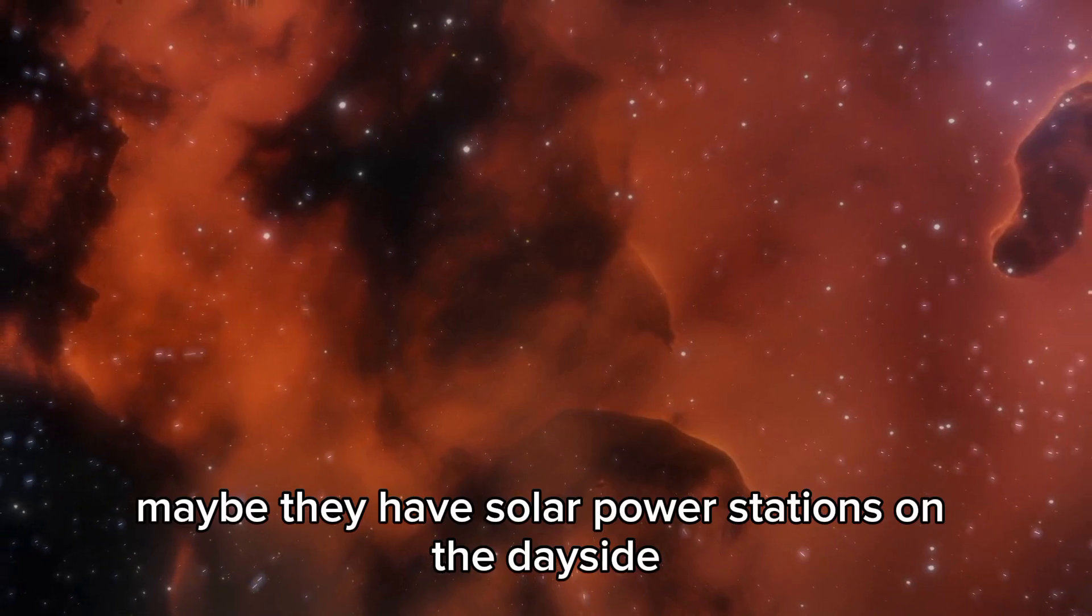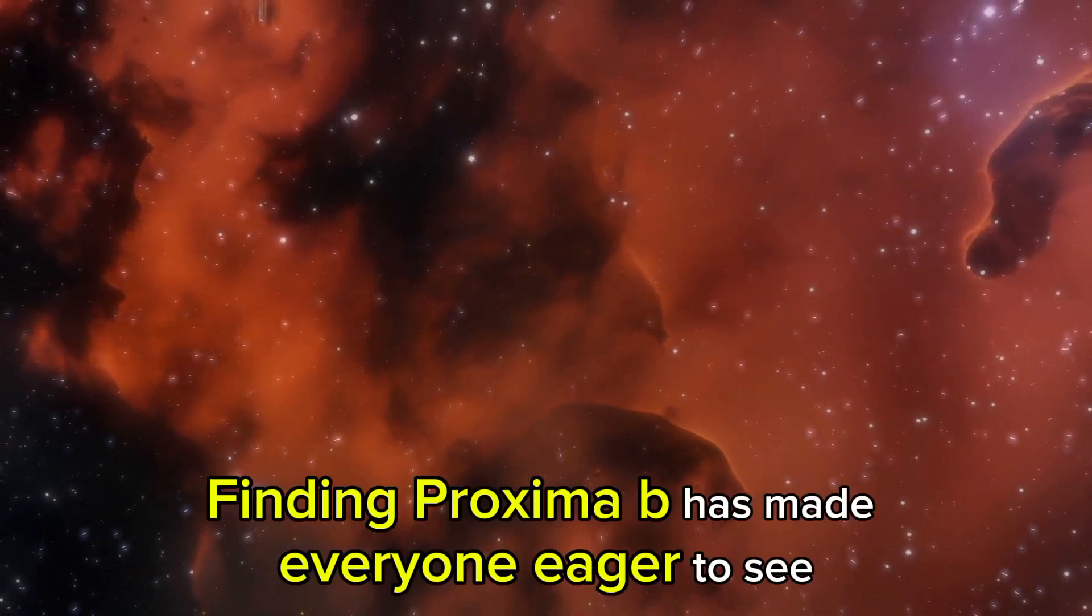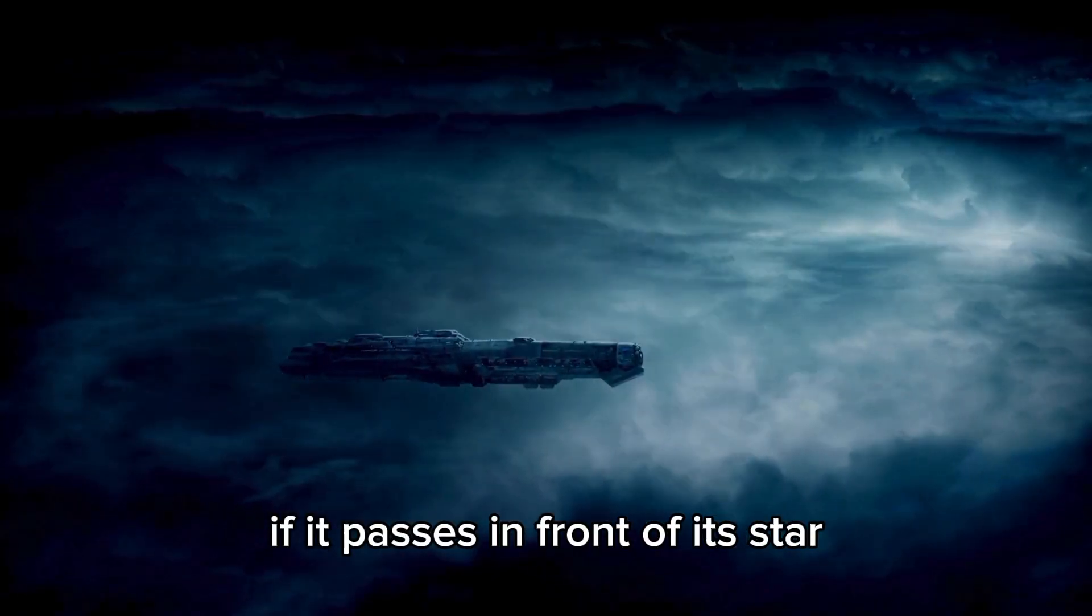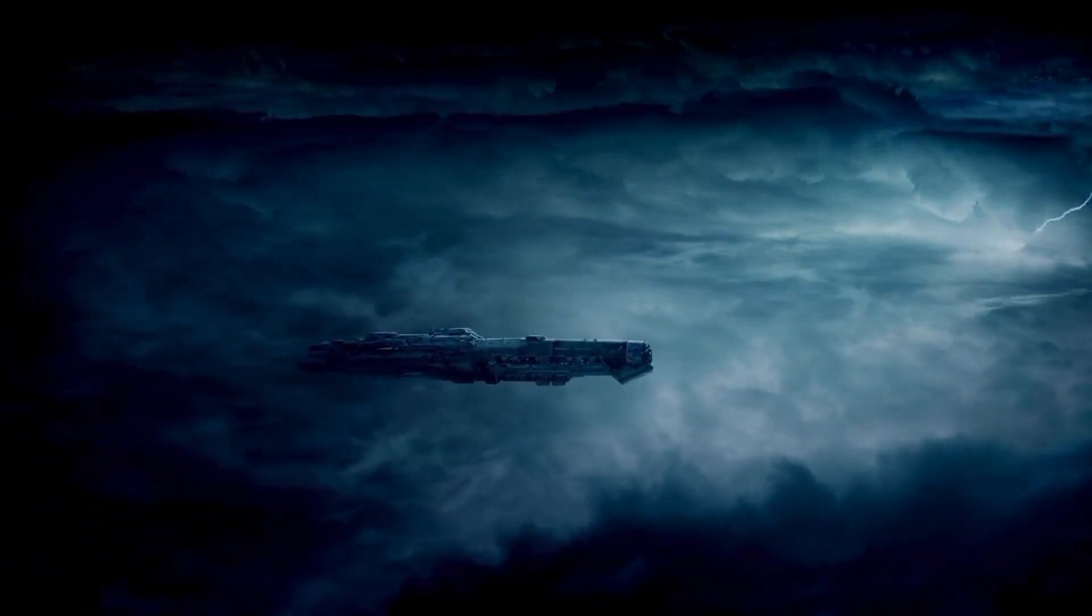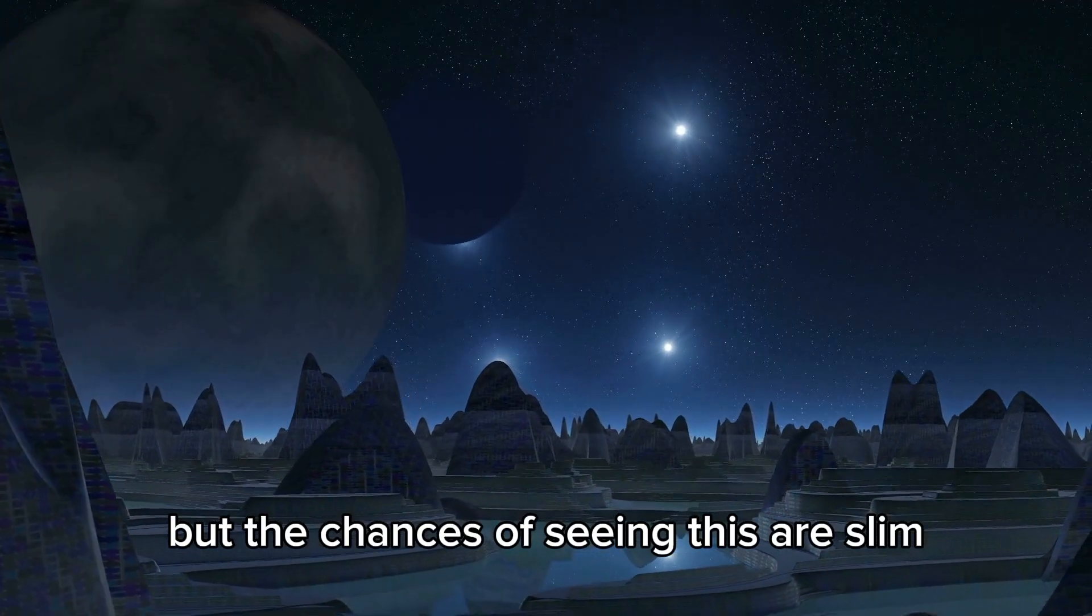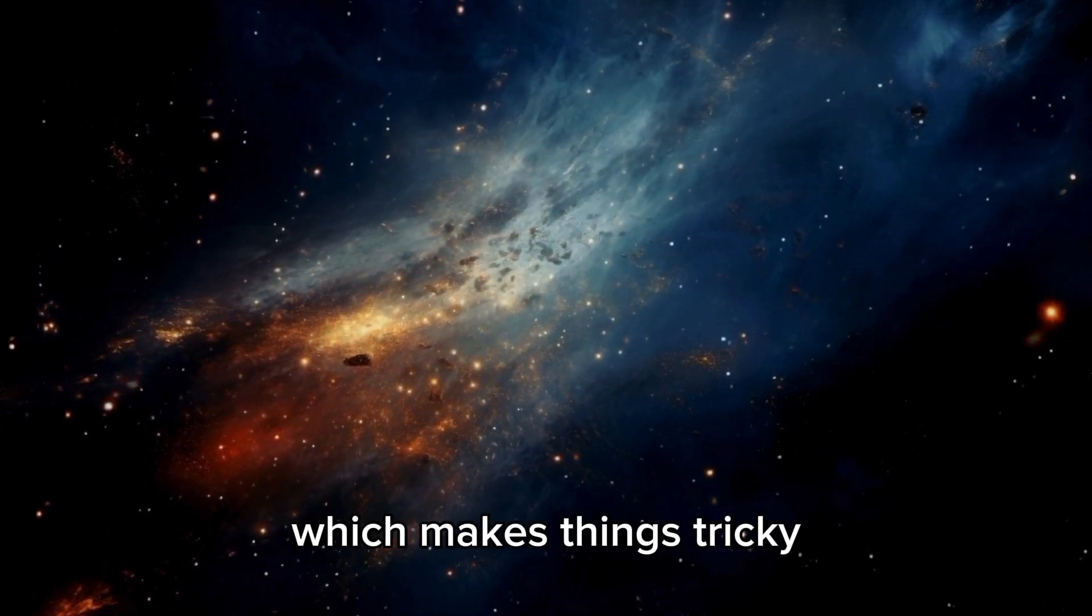Maybe they have solar power stations on the day side to power lights and heat the dark side. Finding Proxima b has made everyone eager to see if it passes in front of its star from our point of view. This would let us figure out its size and density. But the chances of seeing this are slim. Plus, the star is prone to eruptions, which makes things tricky.